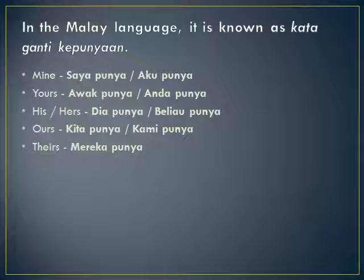Next is ours. Ours maksudnya kita punya, kami punya. Jadi, ours tu menunjukkan kepunyaan, belonging to us. Next is theirs. Theirs bermaksud mereka punya. Dia menceritakan tentang mereka punya barang tersebut.